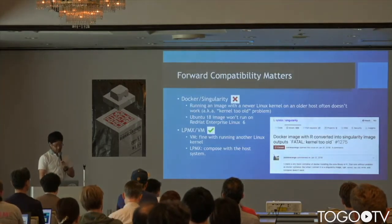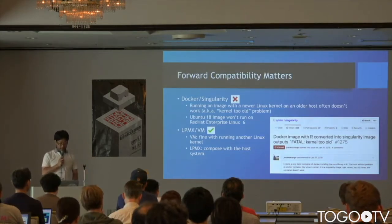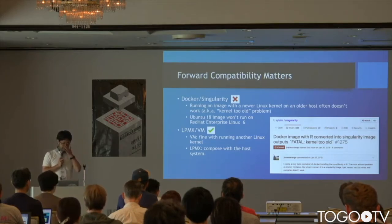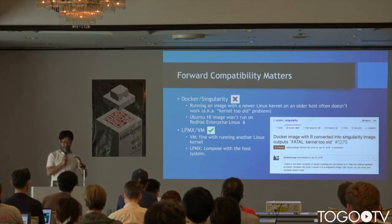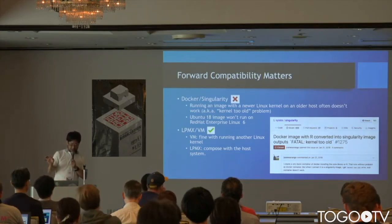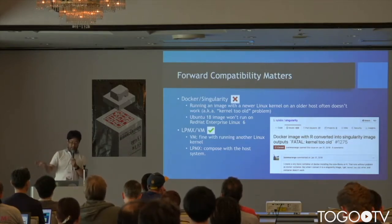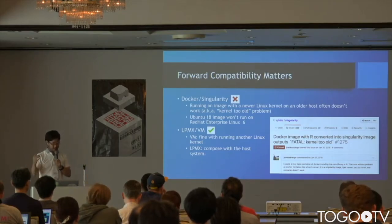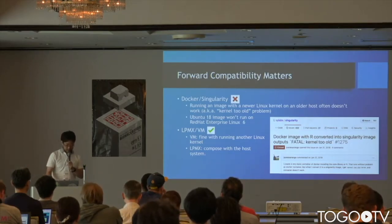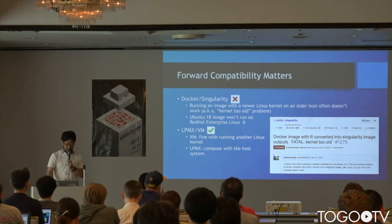Forward compatibility also matters. In Docker or Singularity, you can't run programs that rely on newer kernels. For example, on Red Hat Enterprise Linux 6, you can't run even the ls command from an Ubuntu 18 image because ls uses newer system calls not present in RHEL 6. With LPMX's virtual machine-like approach, you can run such programs by composing host programs with container images.